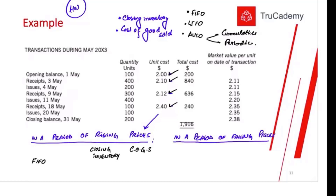In FIFO, we use the units that we bought first in our production. So the cost of goods sold will be lower because we are using the cheapest units first — two dollars, 2.10, and so on. The closing inventory will be based on the last units that we bought, which will be at the higher prices like 2.40 and so on, so the closing inventory will be higher.